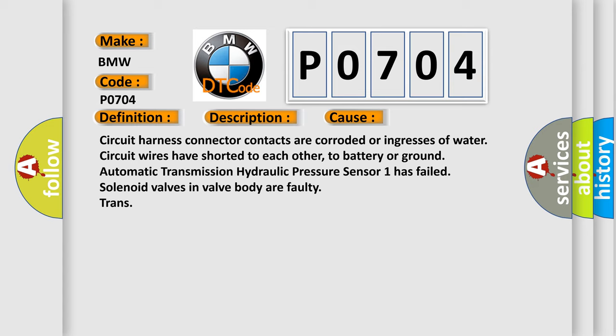This diagnostic error occurs most often in these cases: circuit harness connector contacts are corroded or ingresses of water, circuit wires have shorted to each other, to battery or ground, automatic transmission hydraulic pressure sensor has failed, solenoid valves in valve body are faulty.